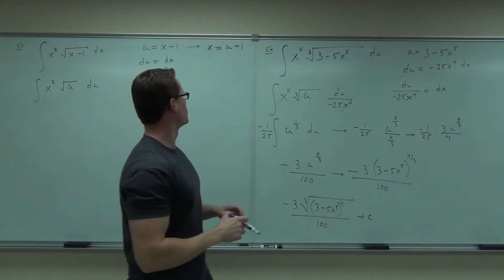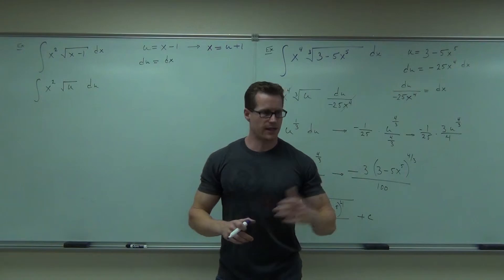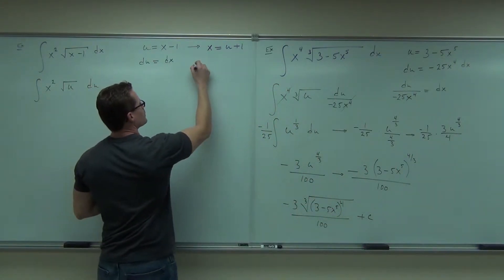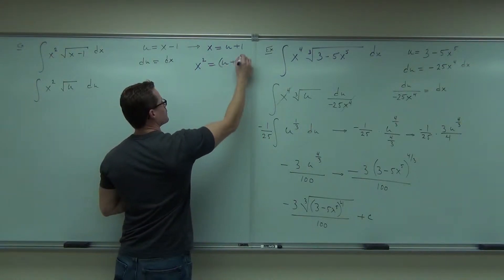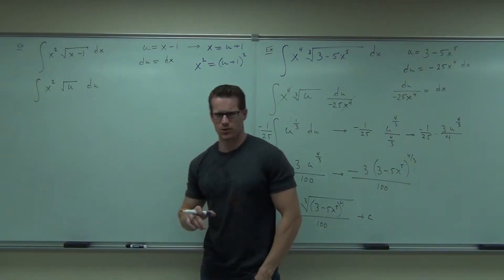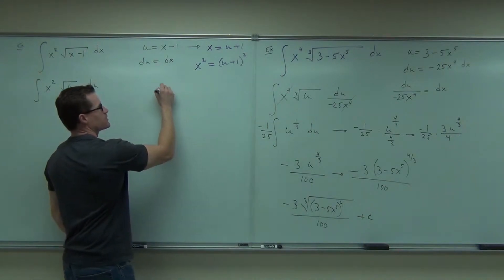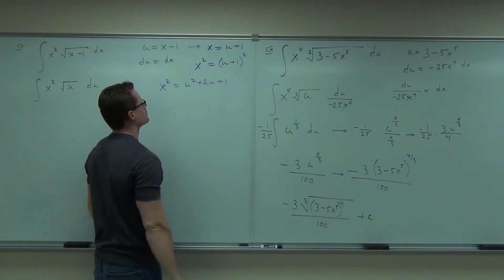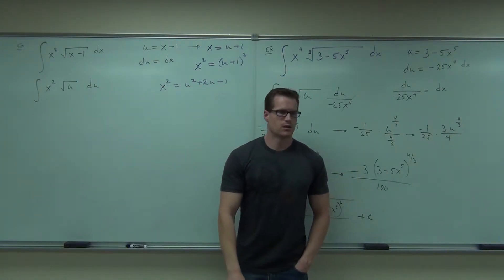Follow me on that? x equals u plus 1. How do you get x squared out of x? That is an equation, isn't it? If I square both sides. Yeah, that works. You okay with that one? Note that if you distribute this, you get u squared plus 2u plus 1. You still okay? Should we distribute it? Yes.